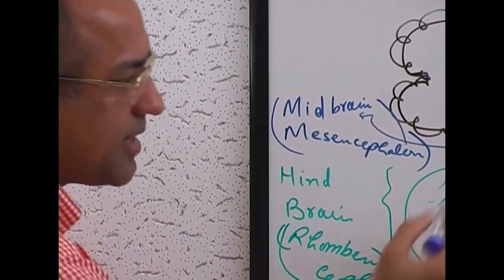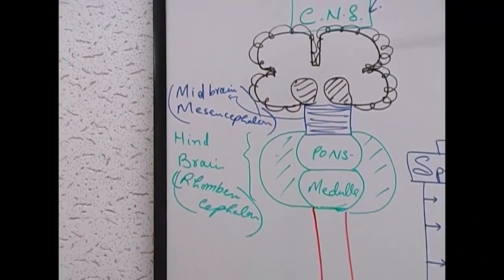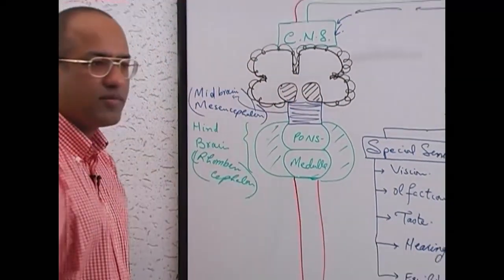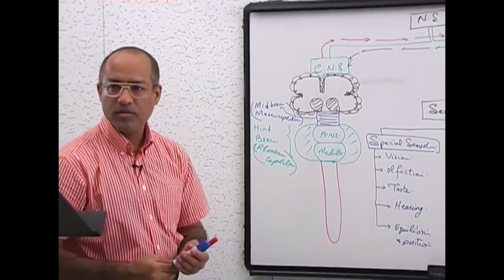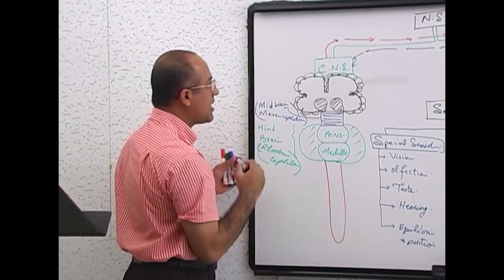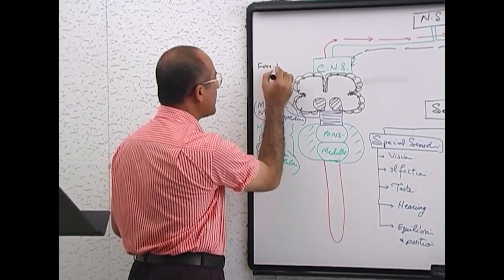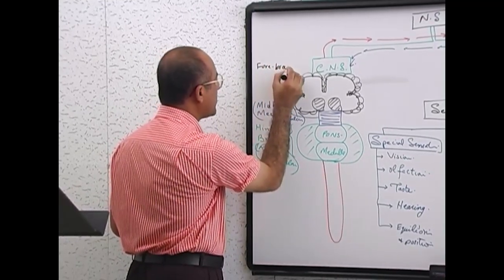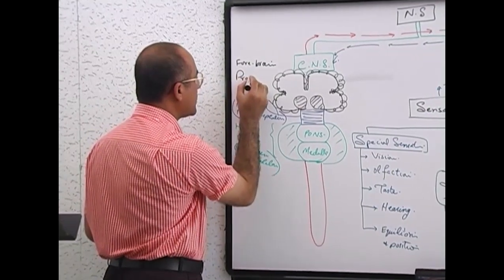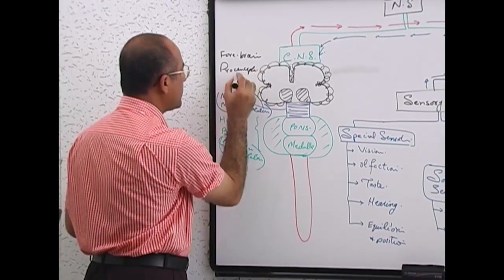So the brain has rhombencephalon and mesencephalon. After that, the top area is called the forebrain, and this forebrain is also called prosencephalon.